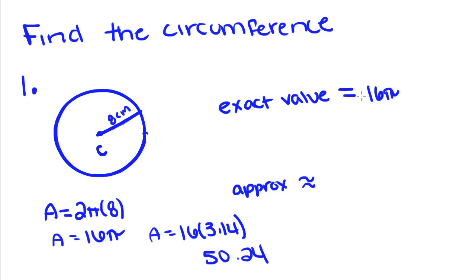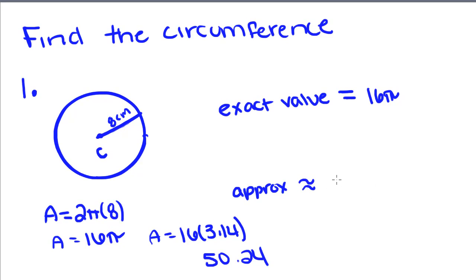When we have an exact value, we use equal signs. But when we approximate the circumference, we're going to use these little wavy lines. That just signals that we approximated it, and that this is not the exact value of the circumference. It's pretty close, it's just not exact.